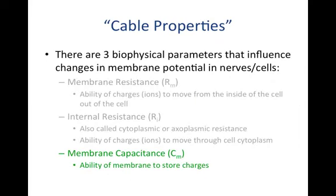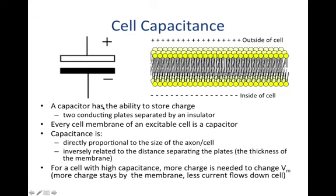Finally, there is membrane capacitance. A capacitor is something that stores charge — technically, two conducting plates separated by an insulator. Cell membranes make great capacitors: the lipid bilayer separating the inside and outside of the cell resists charge flowing, acting as an insulating material, while charge flows well in the water-soluble compartments on either side. Capacitance is directly proportional to the size of the axon or cell — the bigger the cell, the bigger the capacitance. Capacitance is also inversely related to the distance separating the two plates, so if the inside and outside of the cell are functionally farther apart, capacitance decreases.